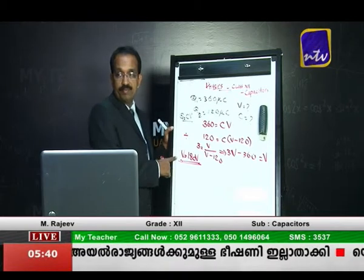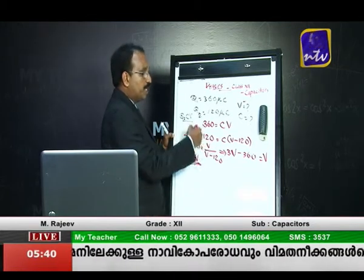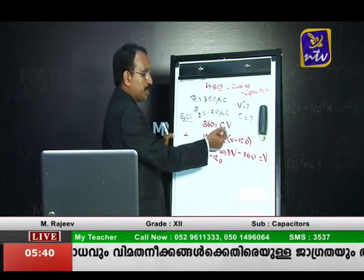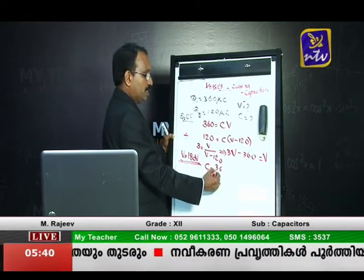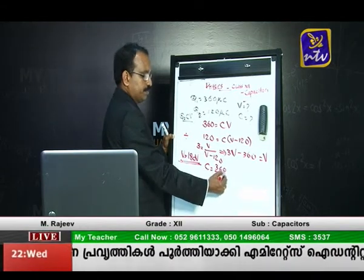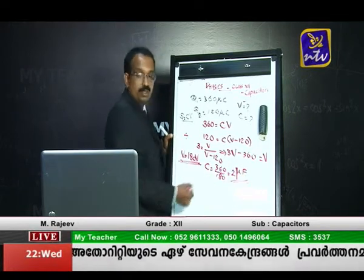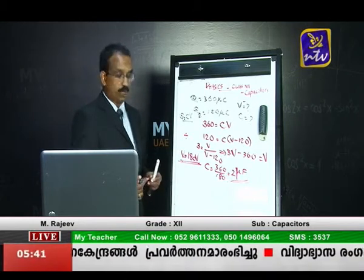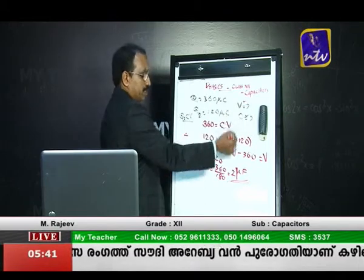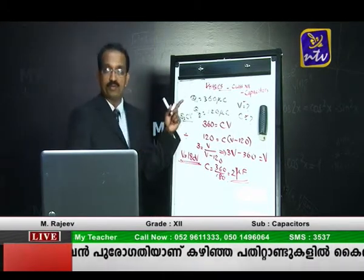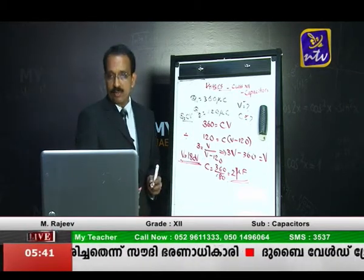We got V = 180 volts. Now we find C using the first equation: C = Q/V = 360/180 = 2 microfarads. Since all units were in micro, the capacitance comes out to be 2 microfarads. So we have both answers: V = 180 volts and C = 2 microfarads.